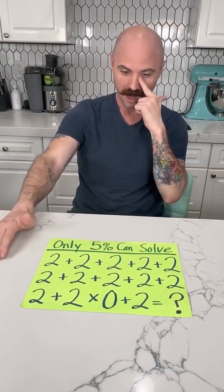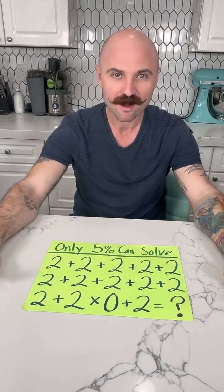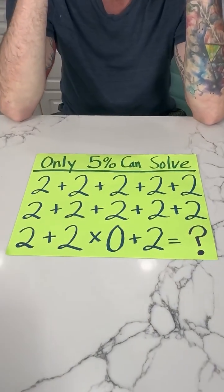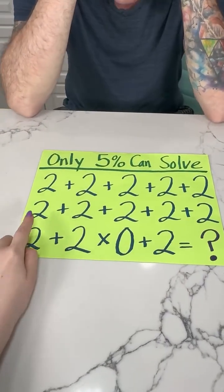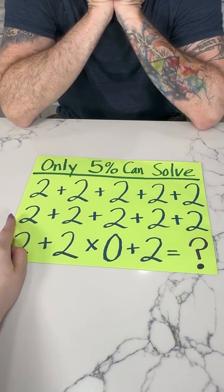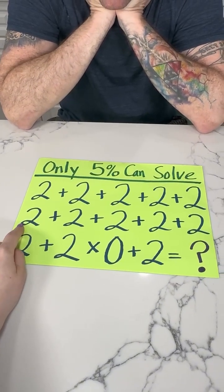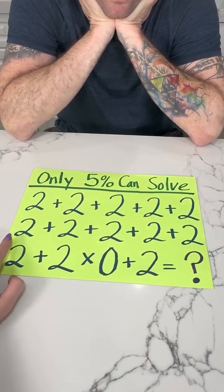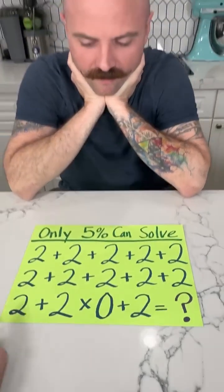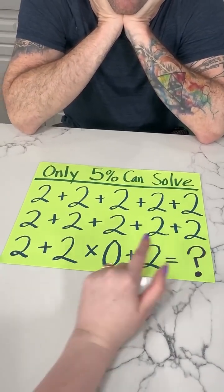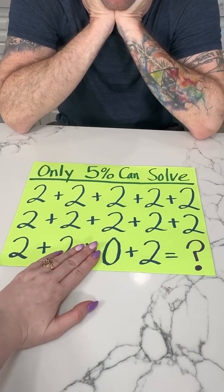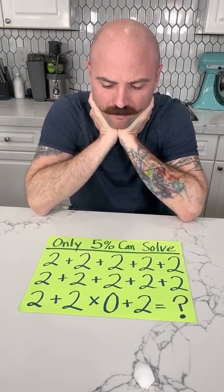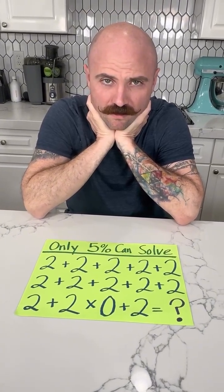Let me just tell you, because I don't think you're the 5% that can get this right. You were super close — you did notice there was nothing in between the ends. But instead of them not existing in the equation, it's just a continuation. So it's 2 plus 2 plus 2 plus 2 plus 22, plus 2 plus 2 plus 2 plus 22, plus 2 equals... 60. It's 60!